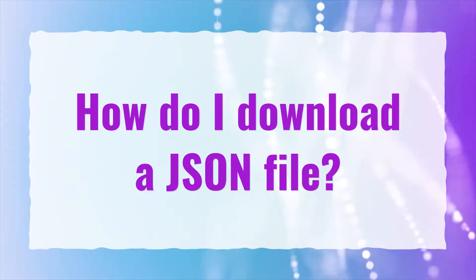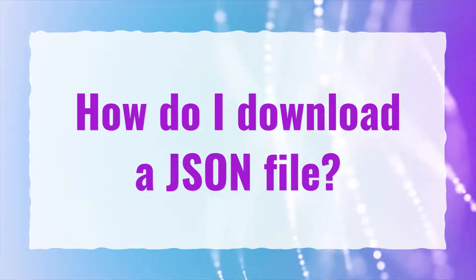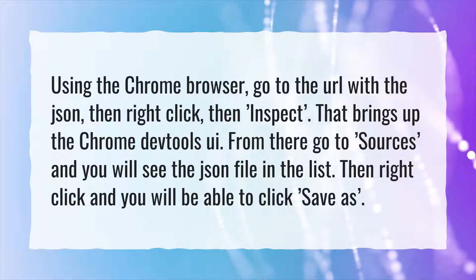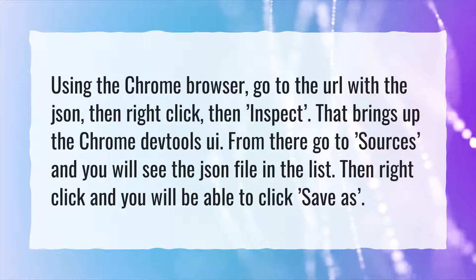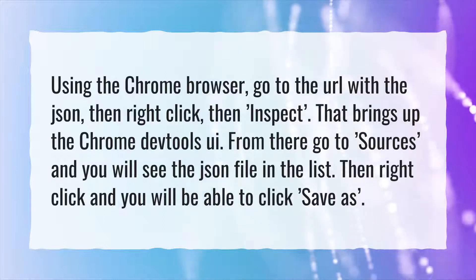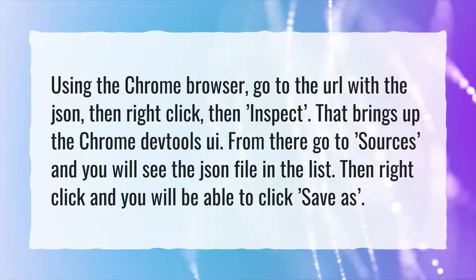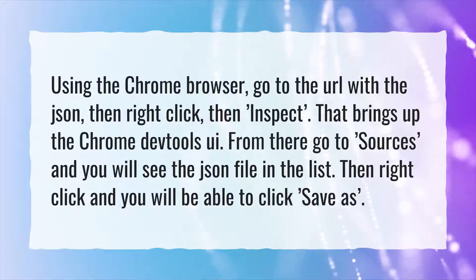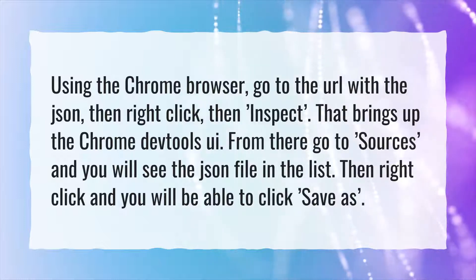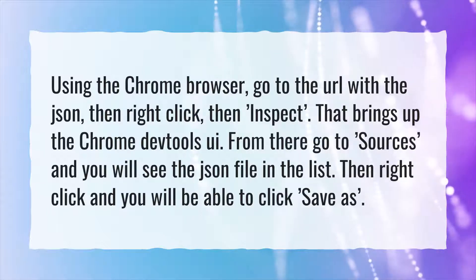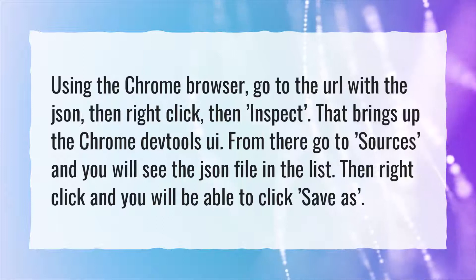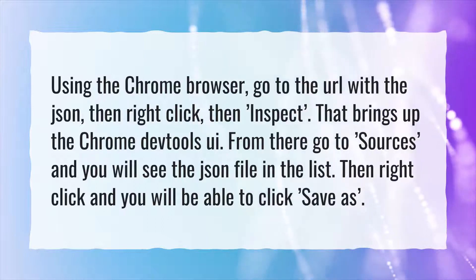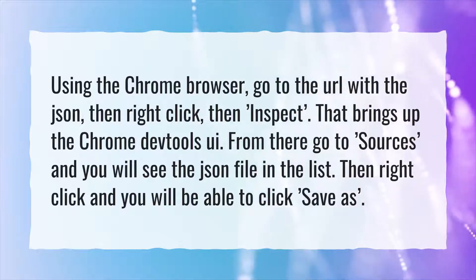How do I download a JSON file? Using the Chrome browser, go to the URL with the JSON, then right-click, then Inspect. That brings up the Chrome DevTools UI. From there go to Sources, and you will see the JSON file in the list. Then right-click and you will be able to click Save As.